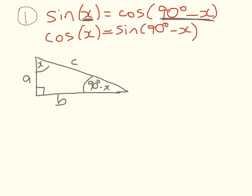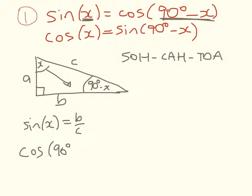Now we want to show that the sine of angle x is equal to the cosine of the complement. So we're going to start off by using SOH-CAH-TOA. So sine of x is equal to b over c. And cosine of 90 degrees minus x is equal to b over c as well. Because the adjacent side here is b. And that equals sine of x. So that's our first proof for this one here.